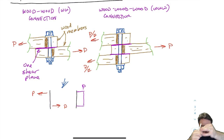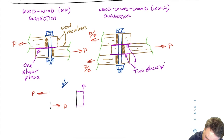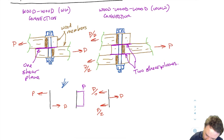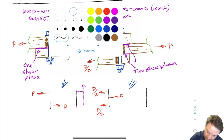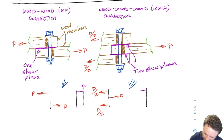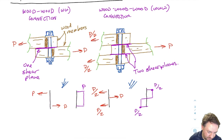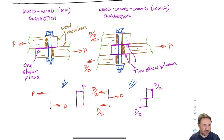I'm pulling one way on one side and the other way on the other side, shearing that bolt. There are now two shear planes. Looking at a free body diagram, I have P on one side and P over two on each of the other two members. The shear in the bolt is P over two on both sides. The benefit of two shear planes is that it actually halves the shear in the bolt.